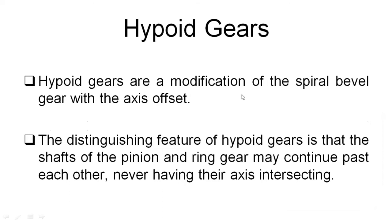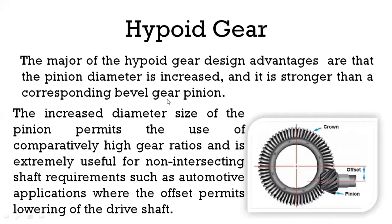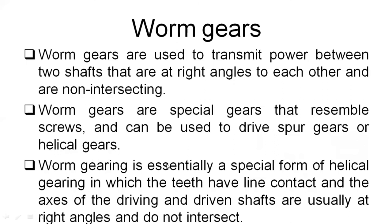Hypoid gears are a modification of spiral bevel gears. Hypoid gears are formed by considering teeth on a convex or concave cylindrical surface — similar to a rolling skew in metal forming where the cylindrical surface is grooved to give a concave surface, or bulgied to give a convex surface. If you consider concave or convex teeth on the surface of the cylinder, you get hypoid gears.